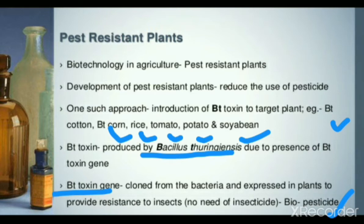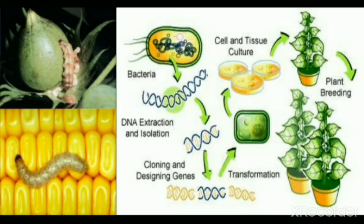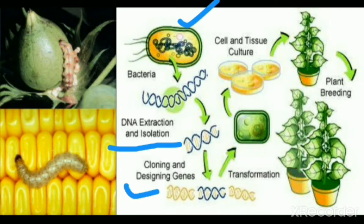The process: first, from bacteria we have DNA present and the gene which has toxin features is first isolated, then extracted and cloned to form one gene structure, then transformed into a host cell, after which culture is formed.